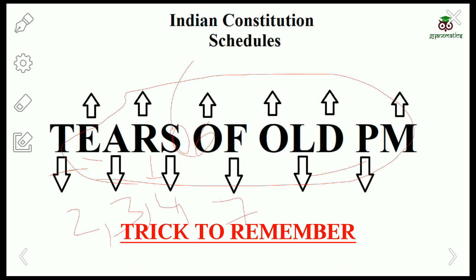The seventh schedule is very important. It deals with subject lists — the Union List, State List, and Concurrent List. India has a three-fold enumeration, which originated from the Government of India Act of 1935. This three-fold enumeration comes under your seventh schedule.